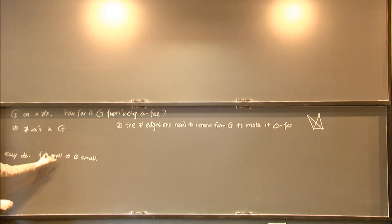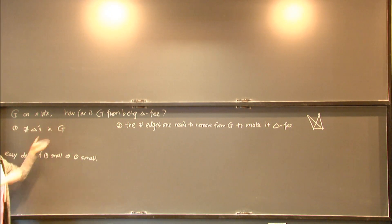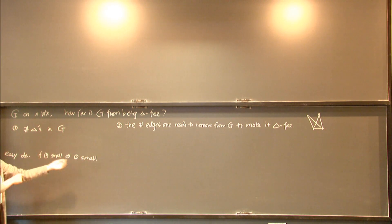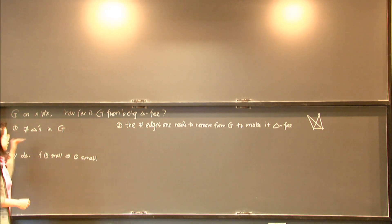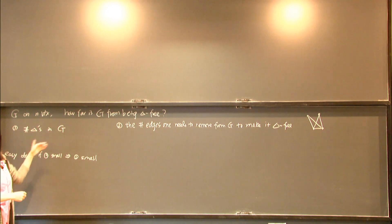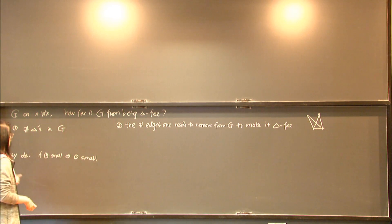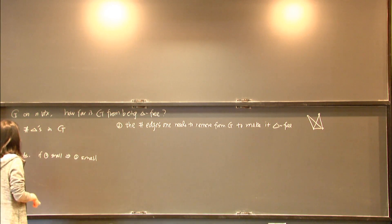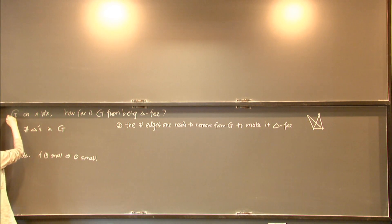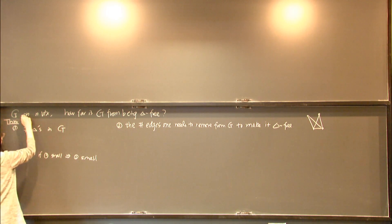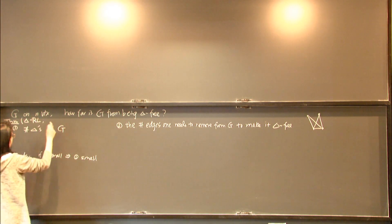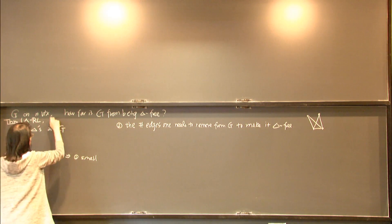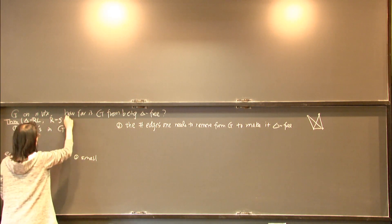It would be nice if these two quantities are equivalent — meaning if one is small then two is small. But the other direction is actually very deep and is called the triangle removal lemma. It's stated as a theorem but called a lemma, and it's due to Ruzsa and Szemerédi in 1976.